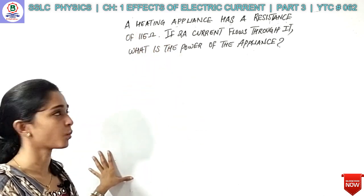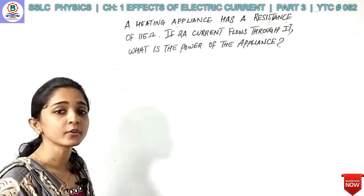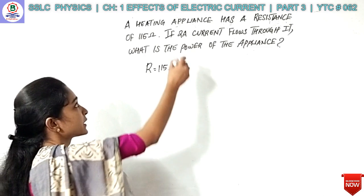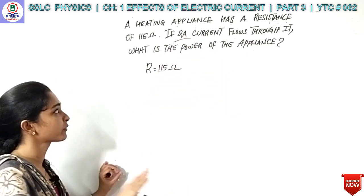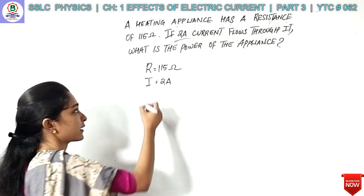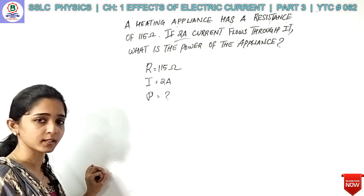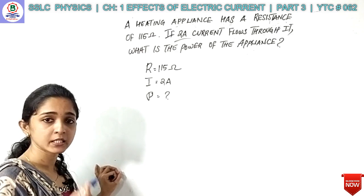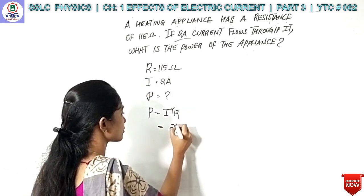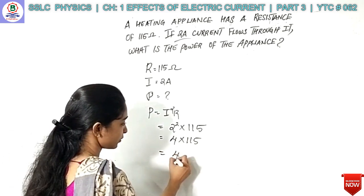A heating appliance has a resistance of 115 Ohm. If 2A current flows through it, what is the power of the appliance? R is equal to 115 Ohm. I is equal to 2A. What is the power? P is equal to I squared R. I squared is 2 squared equals 4. 4 into 115 equals 460W. The power of the appliance is 460W.